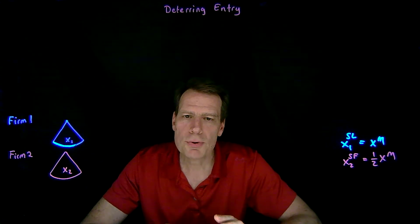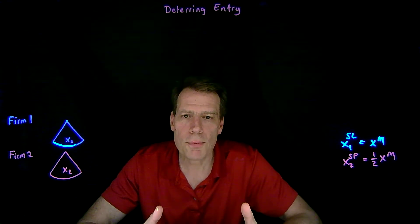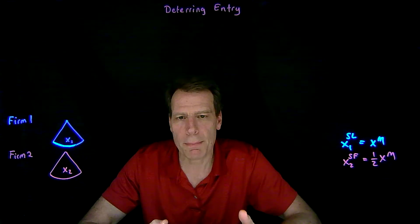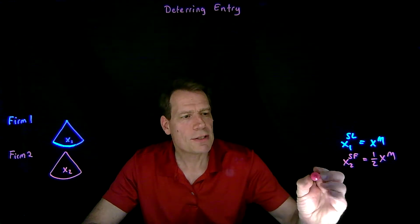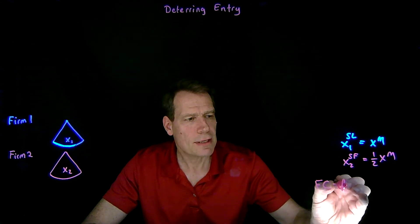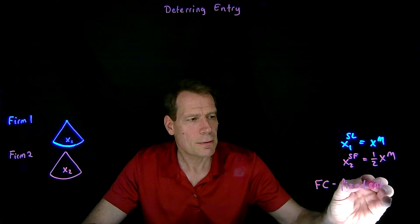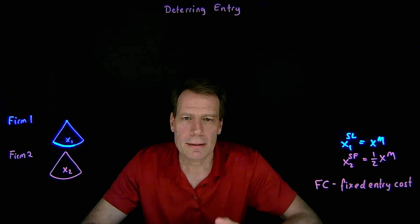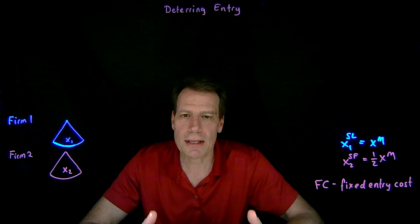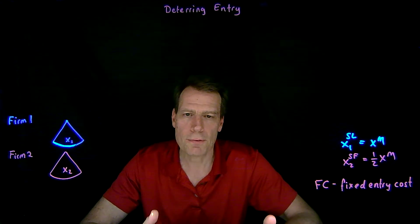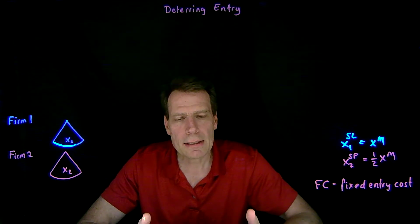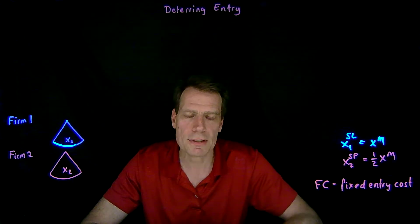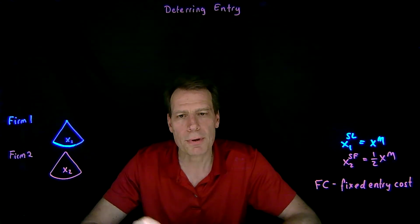We're now going to change the game a little bit by assuming that at the beginning of the game, firm 2 isn't even part of this market. In order to become part of this market, it has to set up shop — it has to pay a fixed cost, which we'll call a fixed entry cost. Once it's done that, that fixed entry cost becomes a sunk cost and is not relevant for anything further the firm is going to do in this market. But at the beginning of the game, it's an economic cost to worry about, because firm 2 is going to have to decide whether it's worth paying that fixed entry cost to operate in this market or not.